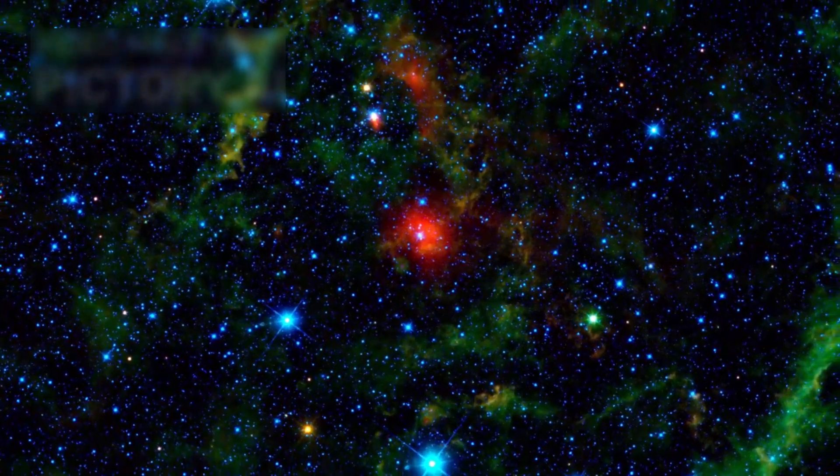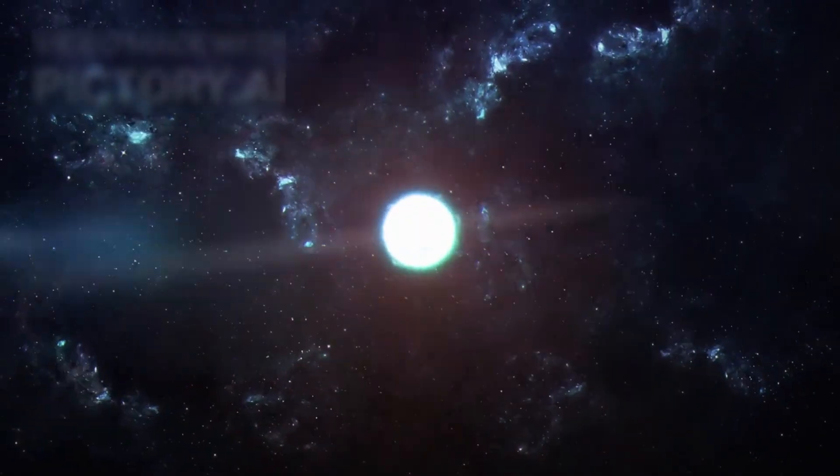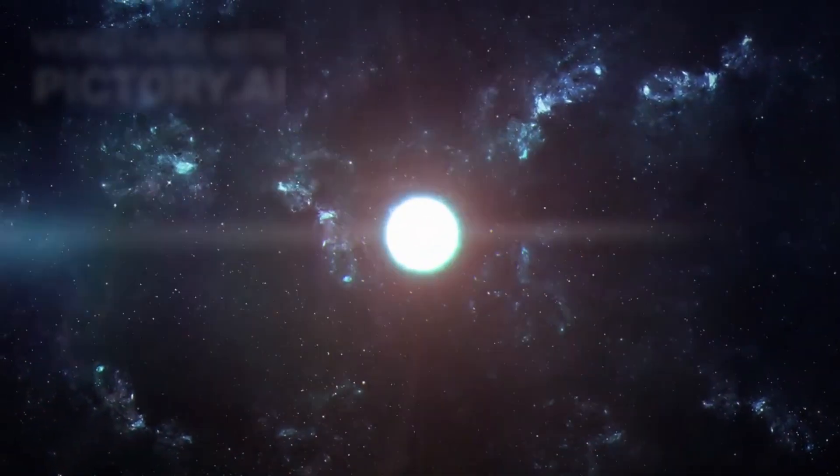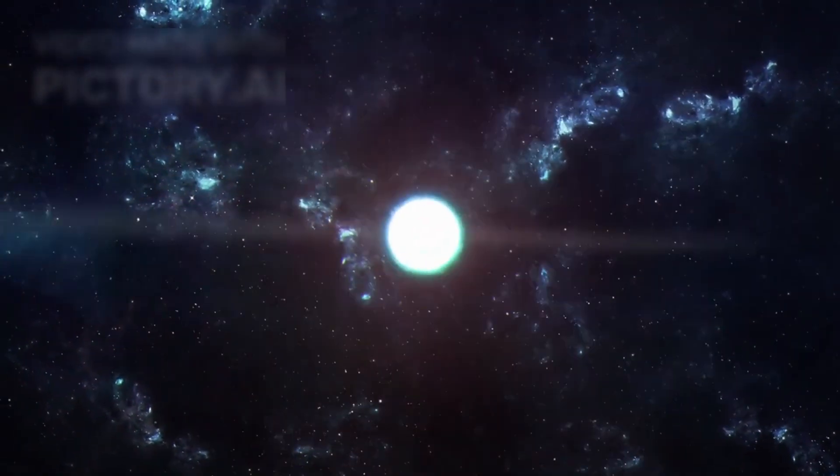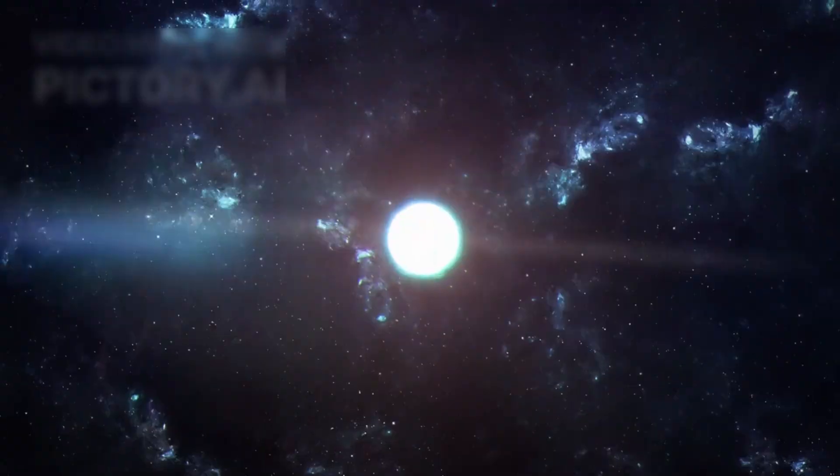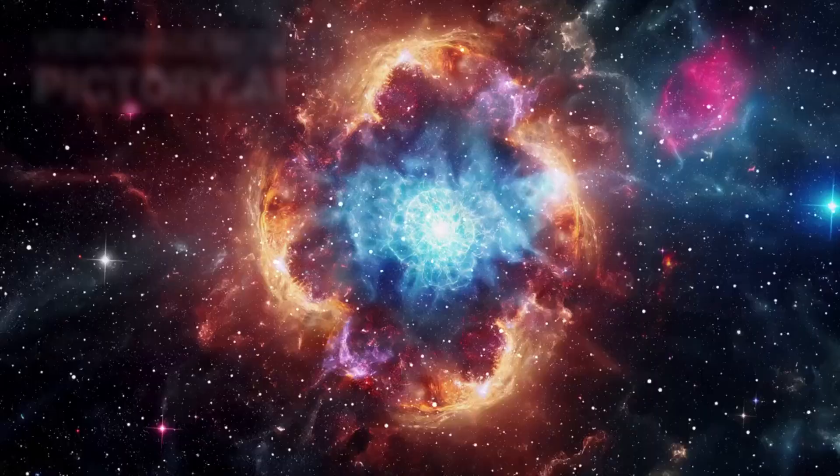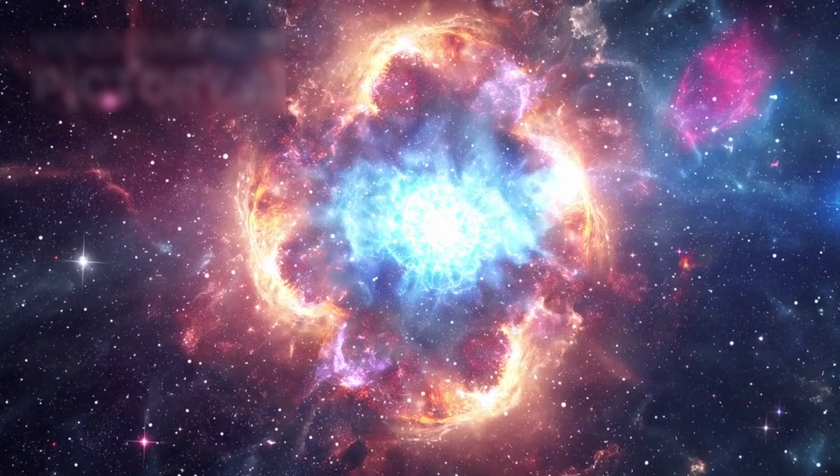And then there's the question of what remains. When a star like Betelgeuse collapses, it can leave behind a neutron star, a city-sized sphere of ultra-dense matter, or, if its mass is sufficient, it can collapse entirely into a black hole.